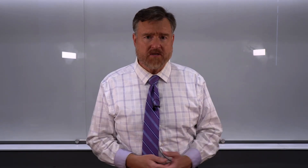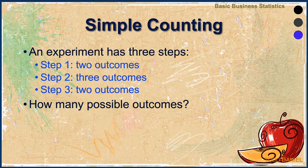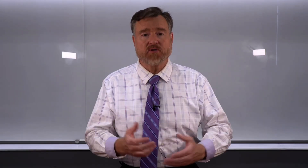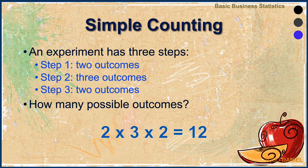Here's another example of simple counting. An experiment has three steps. Step one has two outcomes, step two has three outcomes, and step three has two outcomes. How many possible outcomes are there? Again, for counting multiple independent events, we use multiplication: 2 times 3 times 2 equals 12 potential outcomes.